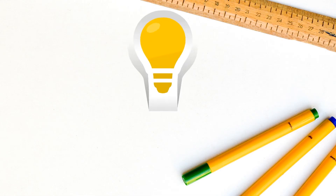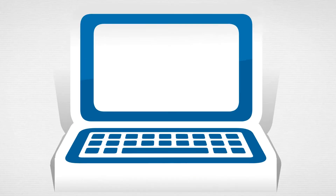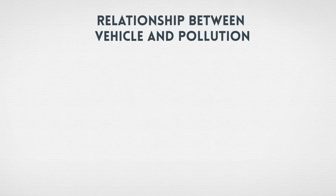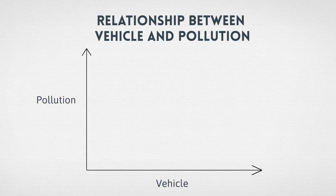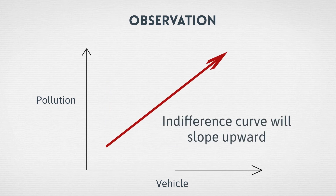Can an indifference curve take any other shape? Let us try to derive the relationship between vehicles and pollution, since pollution depends on the number of vehicles. Pollution is measured on the y-axis and vehicles on the x-axis. The first observation is that greater the number of vehicles, the more will be the pollution. Hence the curve will slope upward, or the function will be increasing.